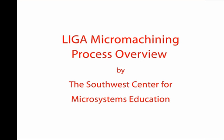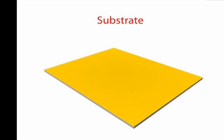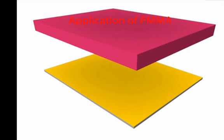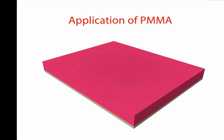This animation shows the steps for making high aspect ratio gears using the LIGA process that we just reviewed. There is no audio, so be thinking about what is happening in each step as you watch.